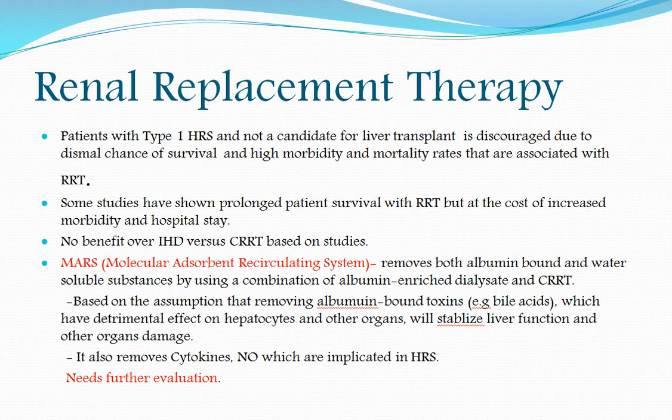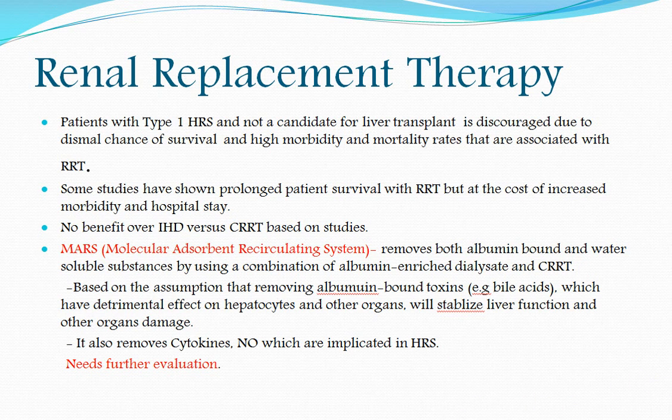Regarding renal replacement therapy, prognosis is very poor, so it is important to discuss mortality and morbidity with patients and gastroenterology attendings. If the patient is not a transplant candidate and chronic liver dysfunction is expected, renal replacement therapy offers little benefit given its high morbidity. Some studies show prolonged survival but at the cost of increased morbidity and hospital stay, with no benefit of intermittent versus continuous renal replacement therapy. A newer technique, MARS — Molecular Adsorbent Recirculating System — acts as dialysis for the liver, removing both albumin-bound and water-soluble substances using albumin-enriched dialysate combined with CRRT. It is based on the assumption that removing albumin-bound toxins like bile acids, as well as cytokines and nitric oxide implicated in HRS, will stabilize liver function, but it remains investigational.